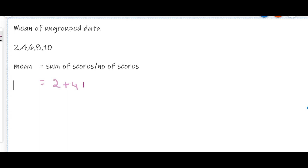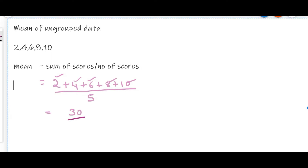2 plus 4 plus 6 plus 8 plus 10 — there are 5 scores in total, divided by 5. So we have 30 divided by 5, which is equal to 6. So the arithmetic mean is 6: sum of scores divided by number of scores.